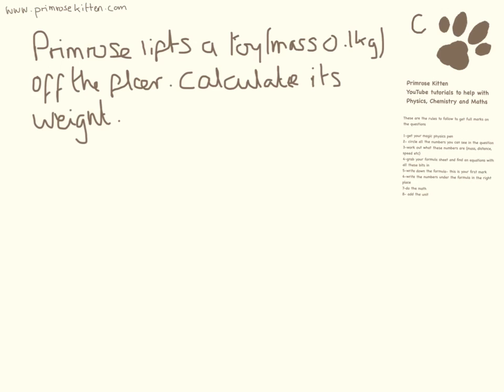So this is our first one, Primrose lifts a toy, mass 0.1kg off the floor, calculate its weight. So the first thing we need to do is to work out all of our numbers and our equation. Here I've already told you that it's the mass of 0.1kg and we need to work out the weight.